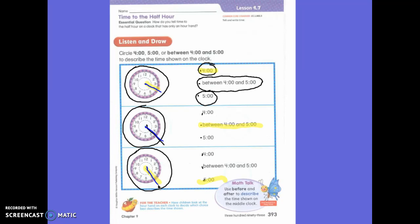Yesterday we learned that if we look at our little hand or our hour hand, we can tell what time it is to the hour. But today we are going to learn what it's called when it is not pointing to a number, when it is between the number.